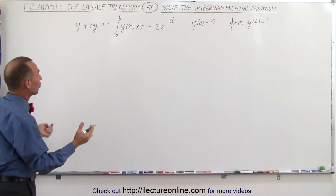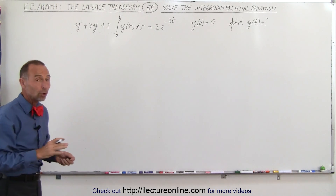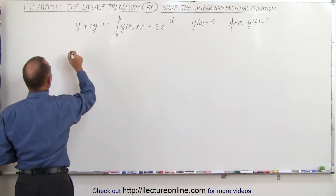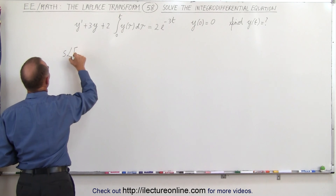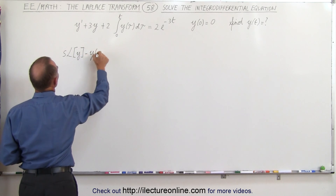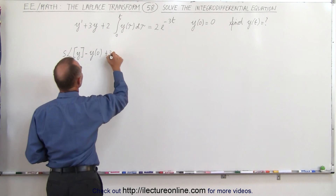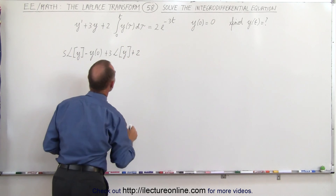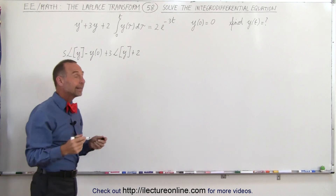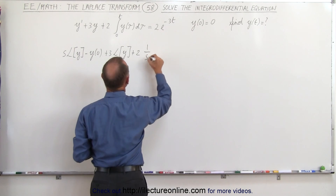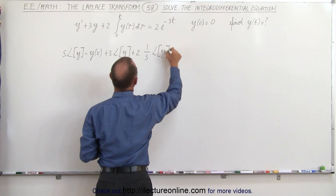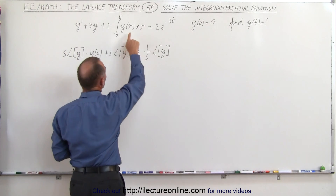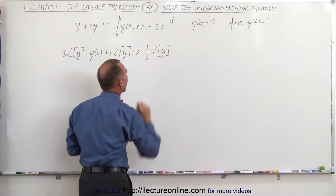We're going to take the Laplace transform of both sides of the equation. Notice this is a non-homogeneous equation. Taking the Laplace transform of y-prime gives us s times L{y} minus the function evaluated at 0, plus 3 times L{y}, plus 2 times the Laplace transform of this integral, which is 1 over s times L{y}.